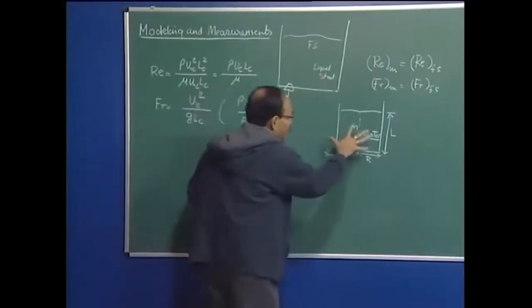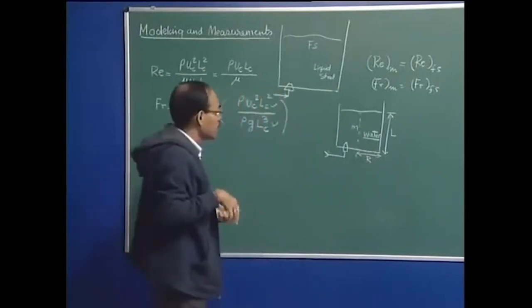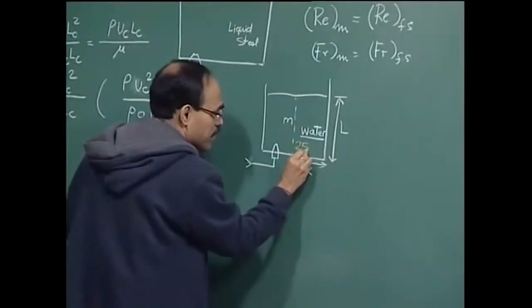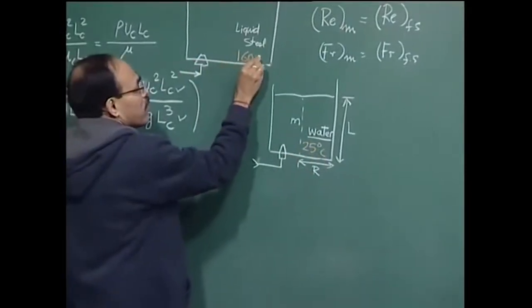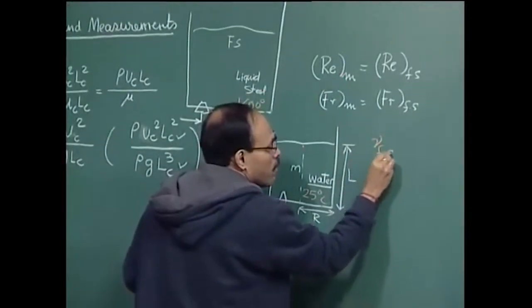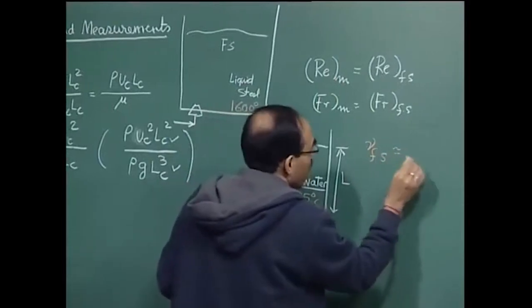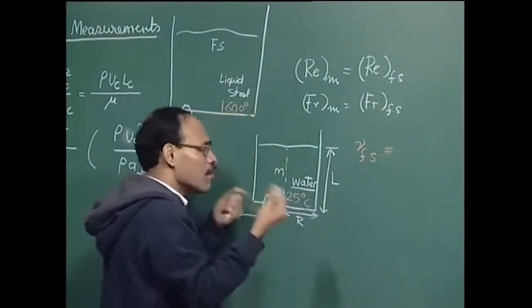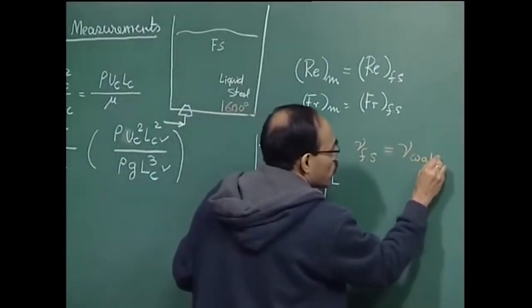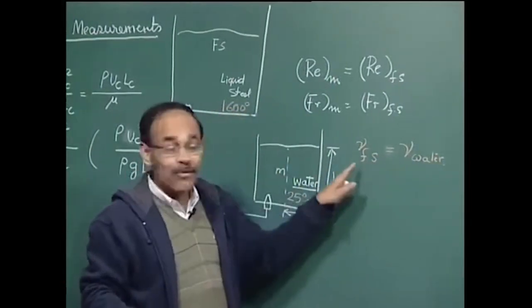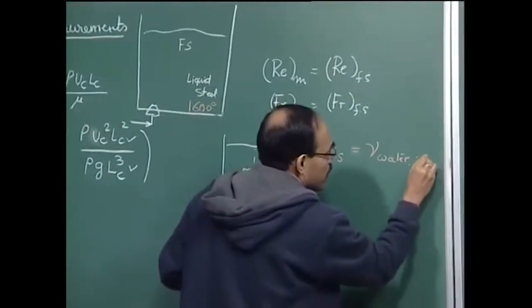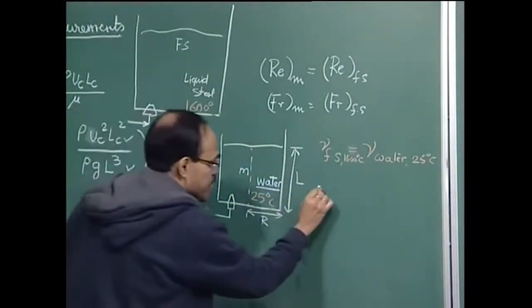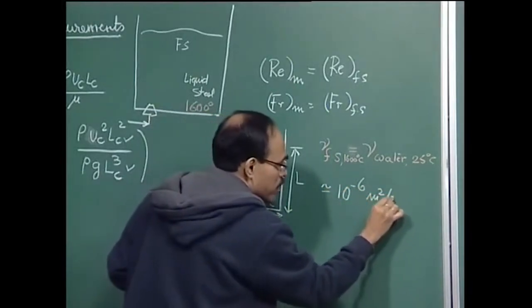For the sake of convenience, let us assume that in the laboratory we would like to use water. One important point: water at room temperature (25°C) and steel at 1600°C have approximately equal kinematic viscosity — within 1 percent, as a first approximation we can say νwater ≈ νsteel. The value in SI units is approximately 10⁻⁶ m²/s.